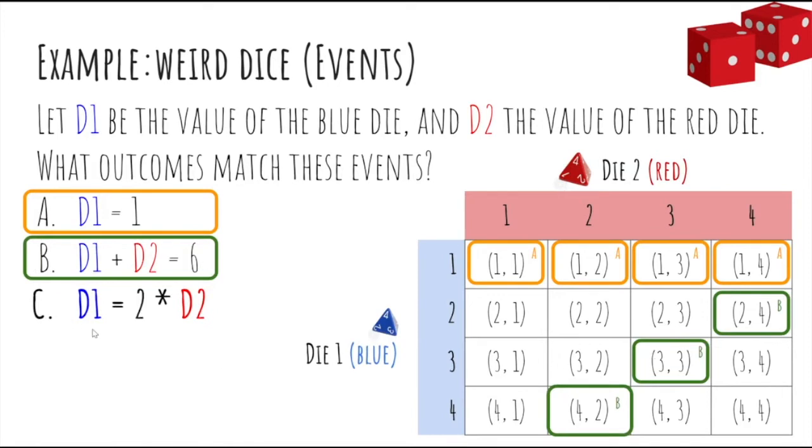What about event C, where D1 is twice the value of D2? Well, you can see that 2 is twice the value of 1, and 4 is twice the value of 2, so those two outcomes belong to event C.